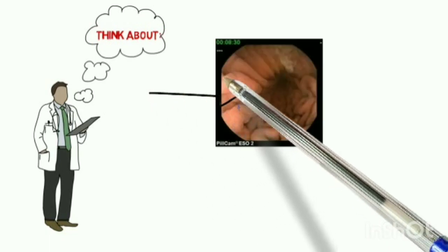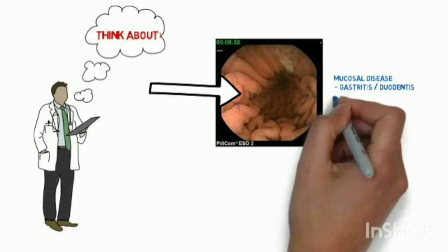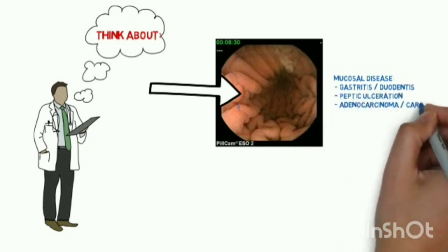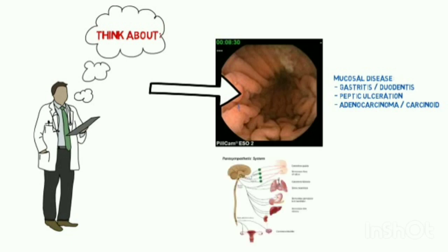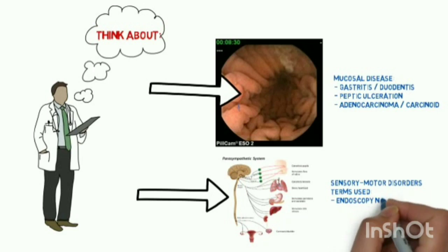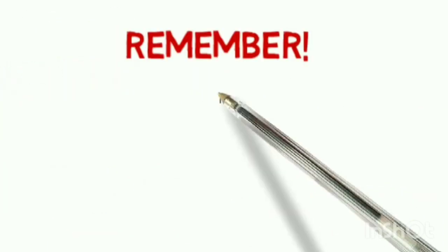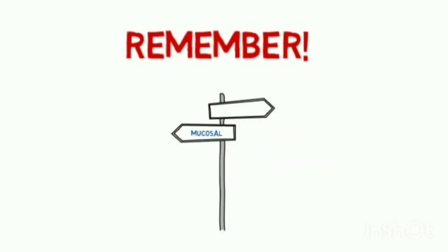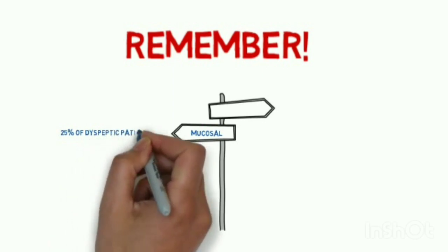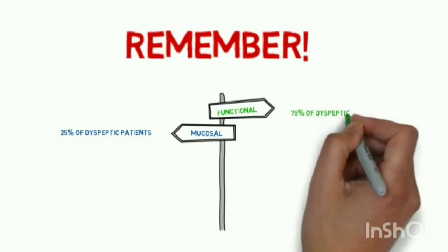Looking at this picture, what is the pathology? Mucosal disease includes gastritis, duodenitis, peptic ulceration, adenocarcinoma, and carcinoid. The other category is sensory or motor dysfunction — also termed endoscopy-negative dyspepsia, non-ulcer dyspepsia, or functional dyspepsia. There are two main causes: mucosal disease accounts for 25% of dyspeptic patients, and functional causes account for 75%.